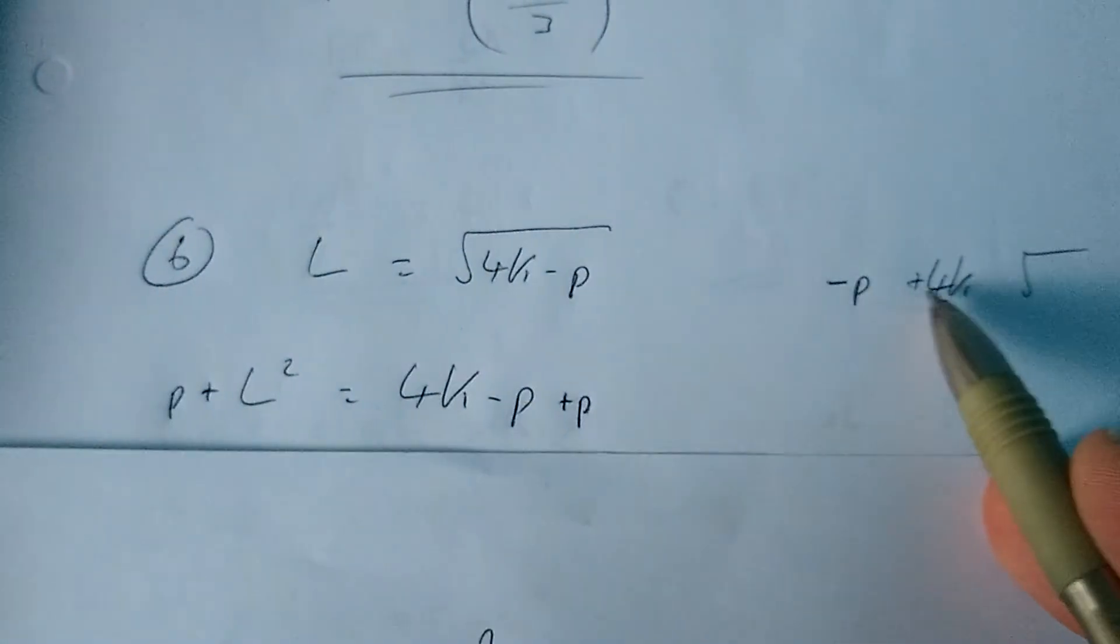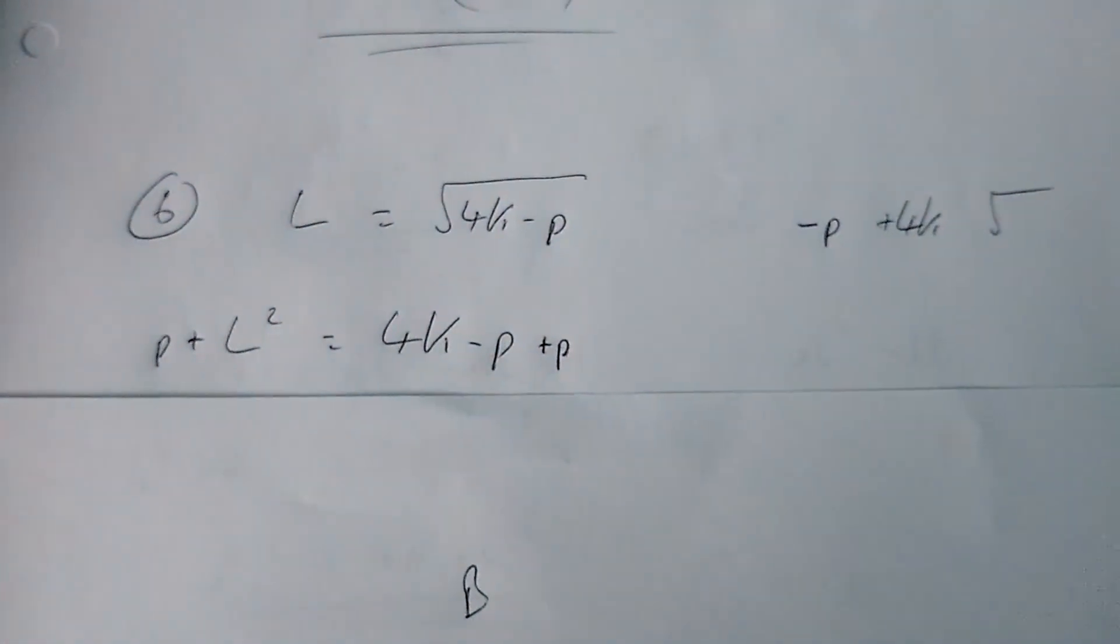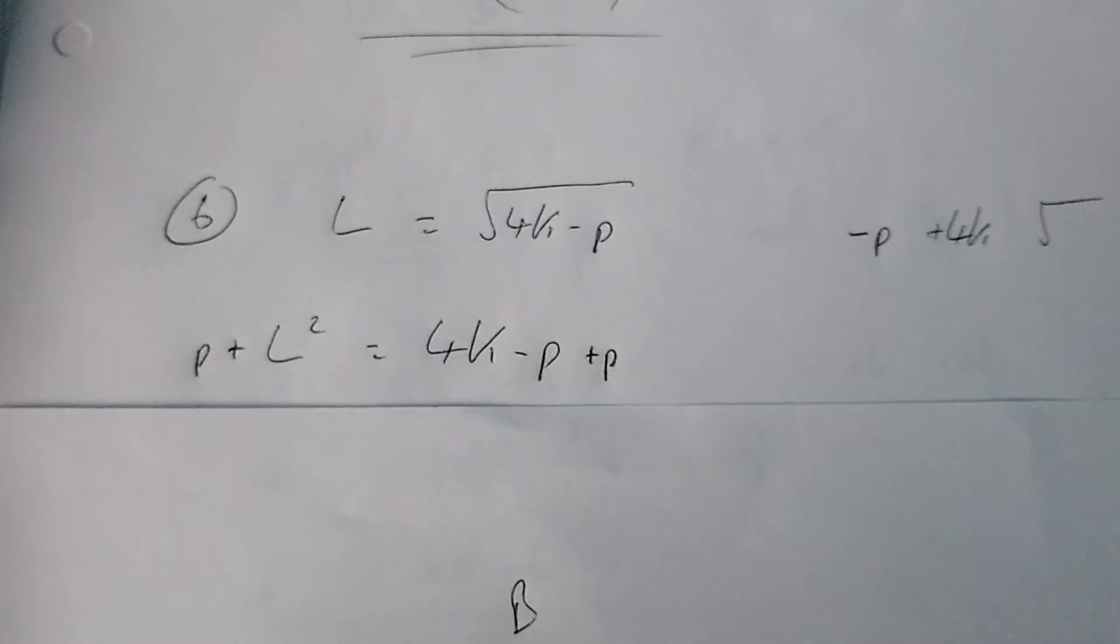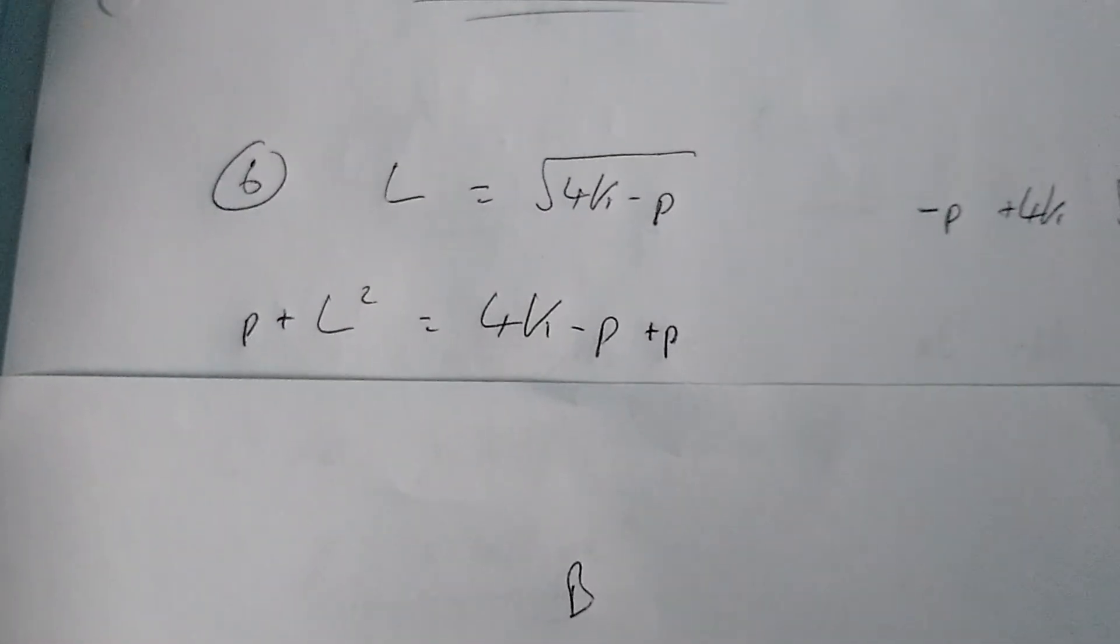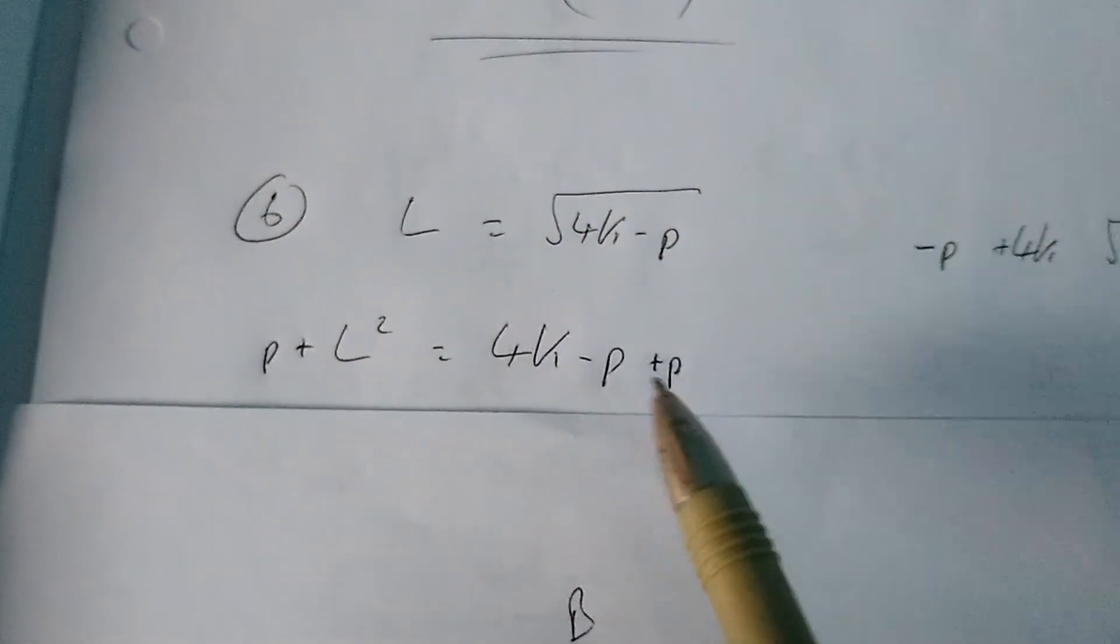So if we actually undo adding 4k by subtracting 4k from both sides, it would still work, we'd still get the same answer.